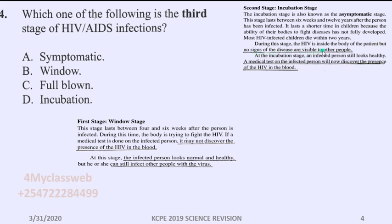During the incubation stage, the HIV is inside the body of the patient but no signs of the disease are visible to other people — no visible signs can be seen. An infected person still looks healthy, but a medical test, specifically the ELISA test, will now be able to detect the presence of HIV in the blood, unlike the window stage where no test would show anything.